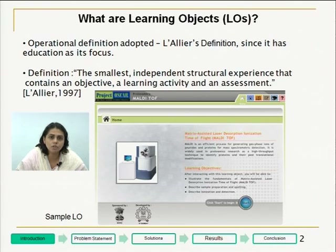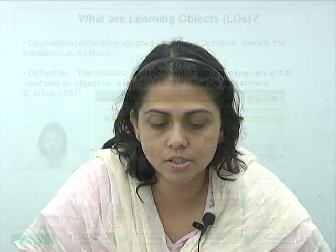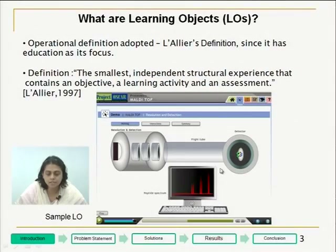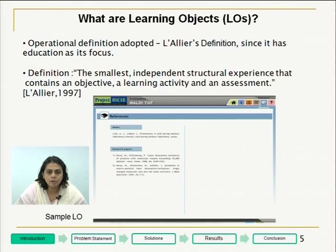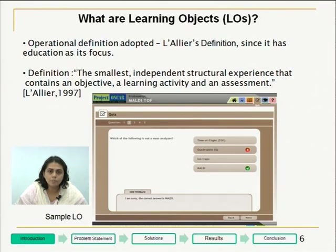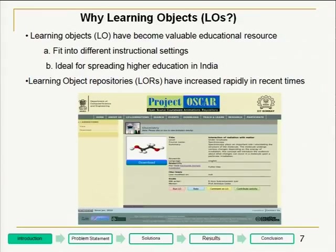On the screen, you see a sample screenshot of an OSCAR ELO. The home page containing the list of learning objectives constitutes the objective part. The learning activity part comprises of the interactive animation part, the glossary part which contains definitions of keywords coming in the animation, and the references section that contains references to books, research papers, or URLs which the user can use to study the concept further. The assessment part is comprised of a set of five multiple choice questions for self-assessment of the learner.